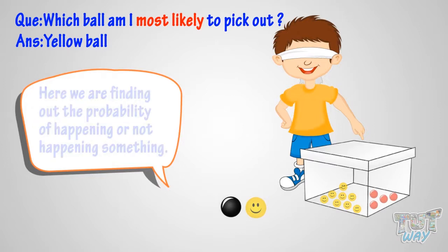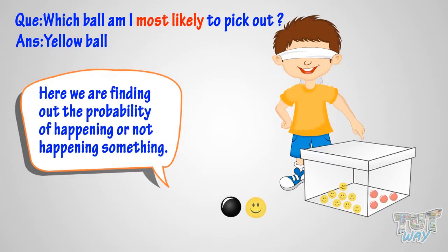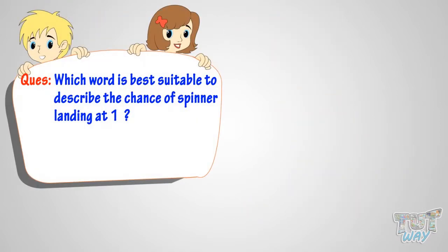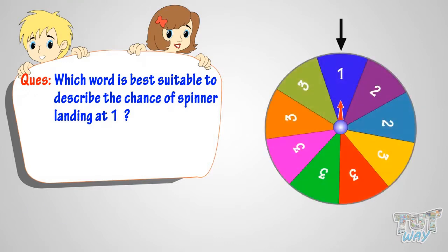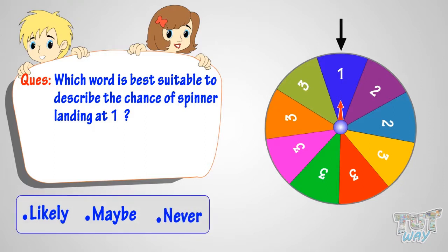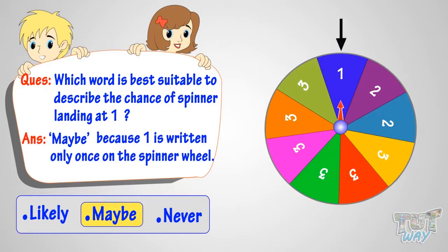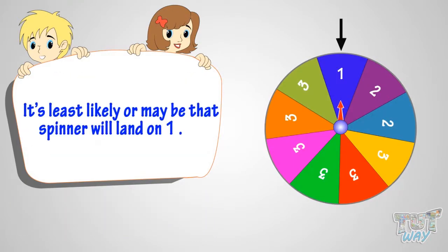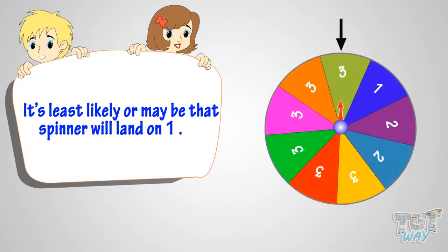So here we are finding out the probability of happening or not happening something. Now you know what's the meaning of probability. Which word is best suitable to describe the chance of spinner landing at one? Likely, maybe, or never? The answer is maybe, because one is written only once on the wheel, so it's least likely or maybe that the spinner will land on one.